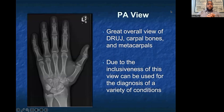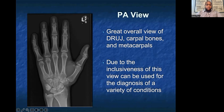The first view we always look at is the PA view. This gives a great overall view of the distal radial-ulnar joint, the carpal bones, and the metacarpals — a snapshot of everything. Going through ABCD: alignment looks very well aligned here — metacarpal bones, proximal, middle, and distal phalanges, and carpal bones all aligned. B for bones: no fractures identified. C for cartilage, D for distribution, and S for soft tissues. That's the PA view.